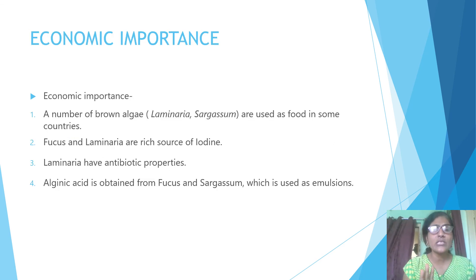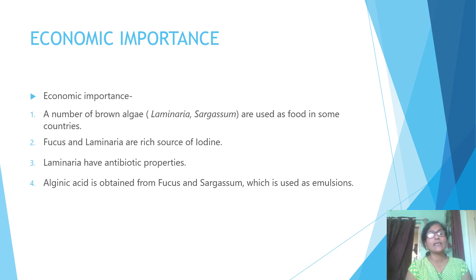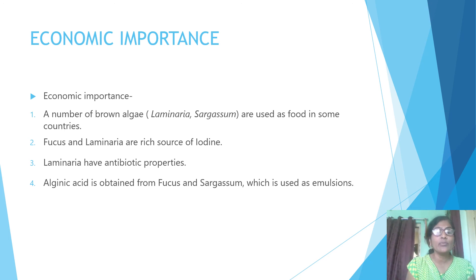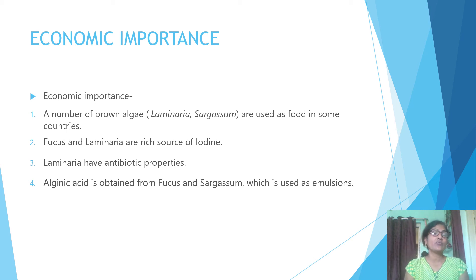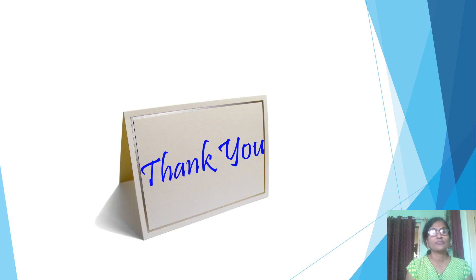Overall, this video covers general features of algae; the next video will go into more detail. Regarding the importance of algae: Fucus and Laminaria are rich sources of iodine. Many algae are edible, and several products are obtained from them, such as alginic acid. Sargassum and other brown algae can be very large in size. Thank you, see you next time.